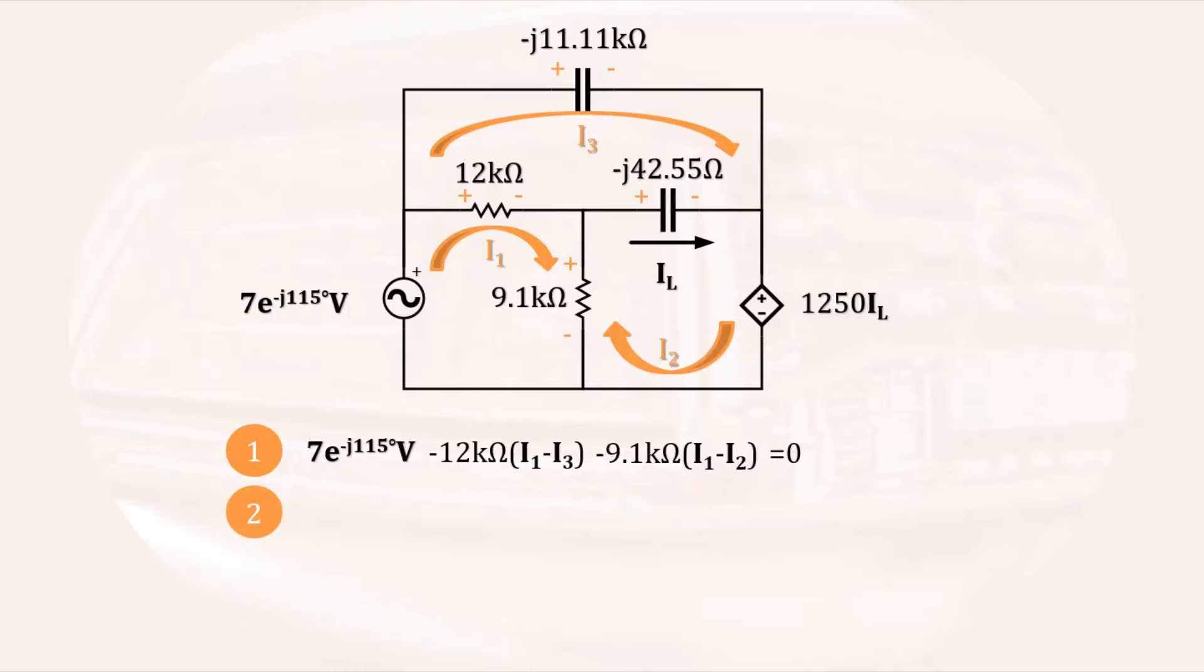Starting in the lower left-hand corner of loop 2, we have a voltage increase of 9.1 kiloohms times I1 minus I2, that is followed by a decrease equal to minus J42.55 ohms times I2 minus I3. Pay close attention to the signs, and a decrease in voltage equal to the dependent source of 1250 times IL. That is a complete loop, so it must add to zero.